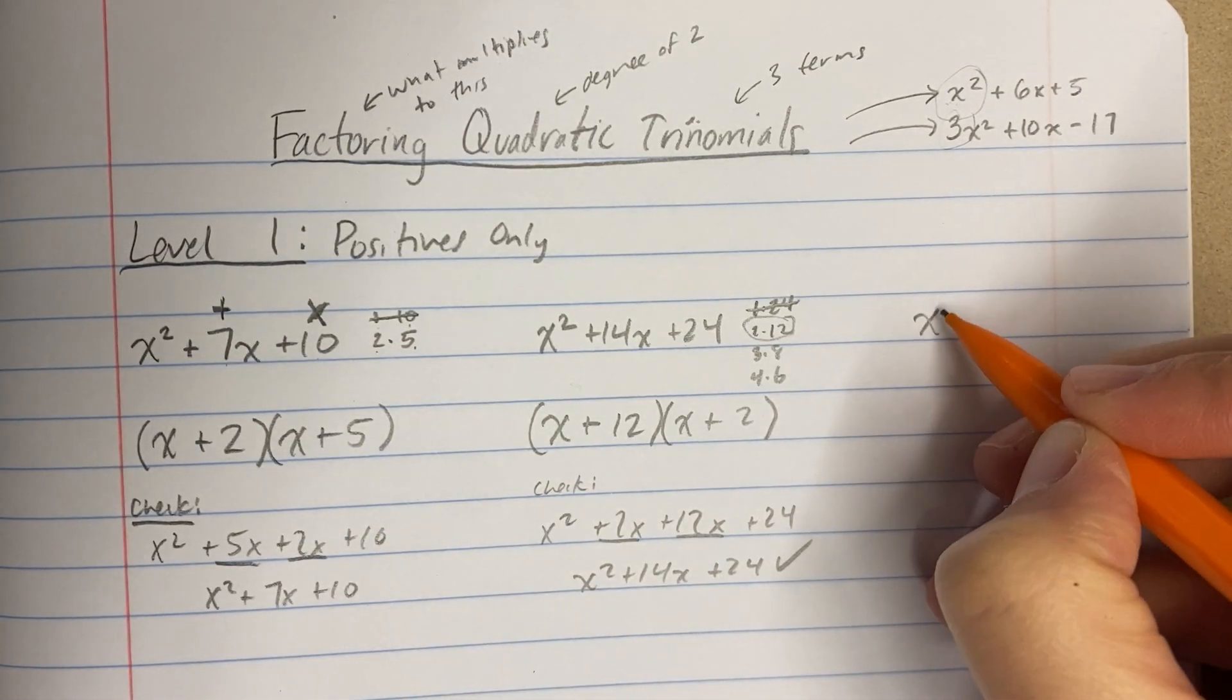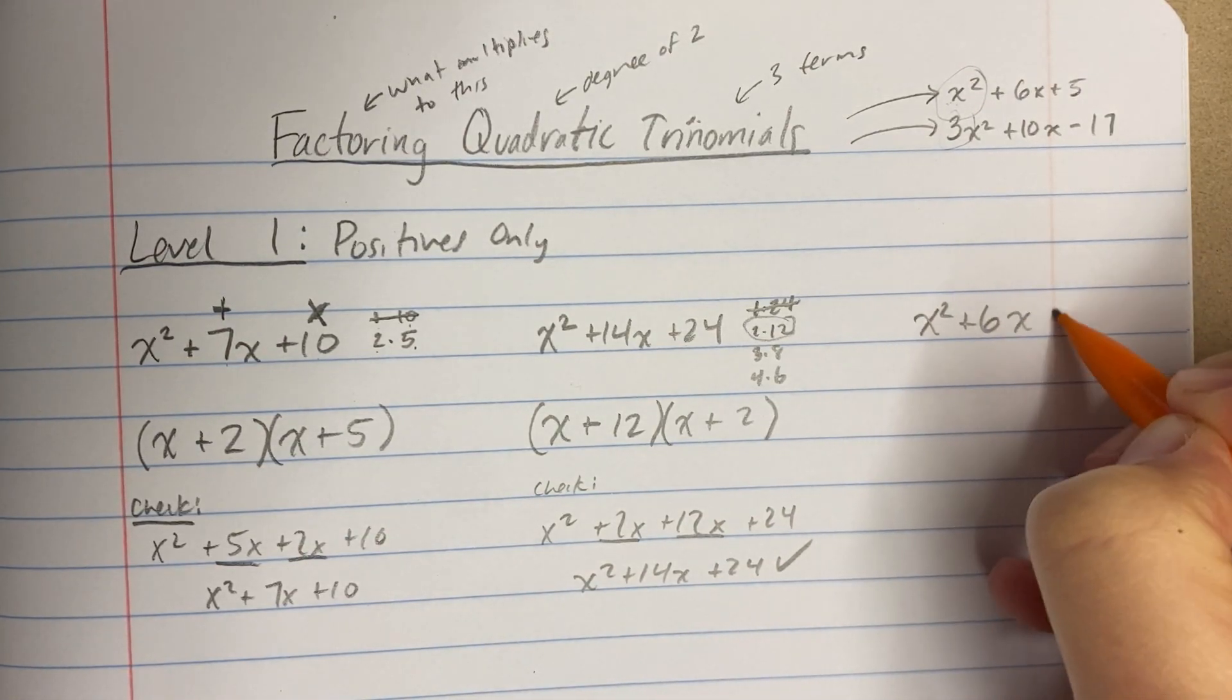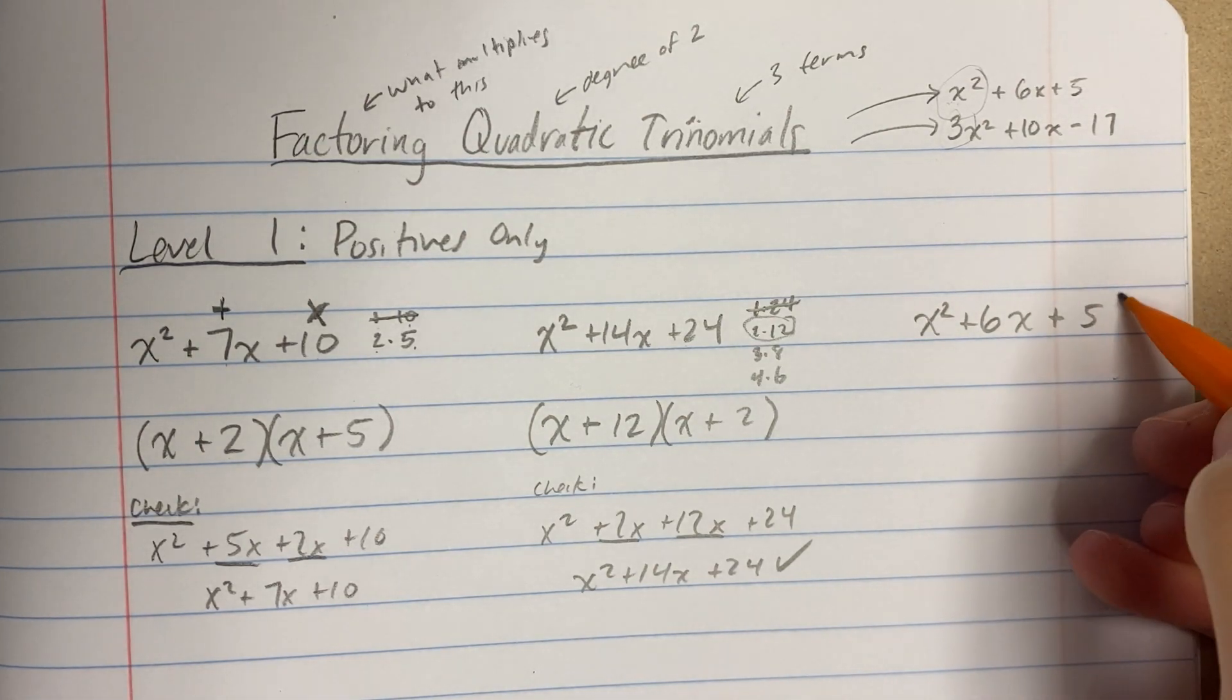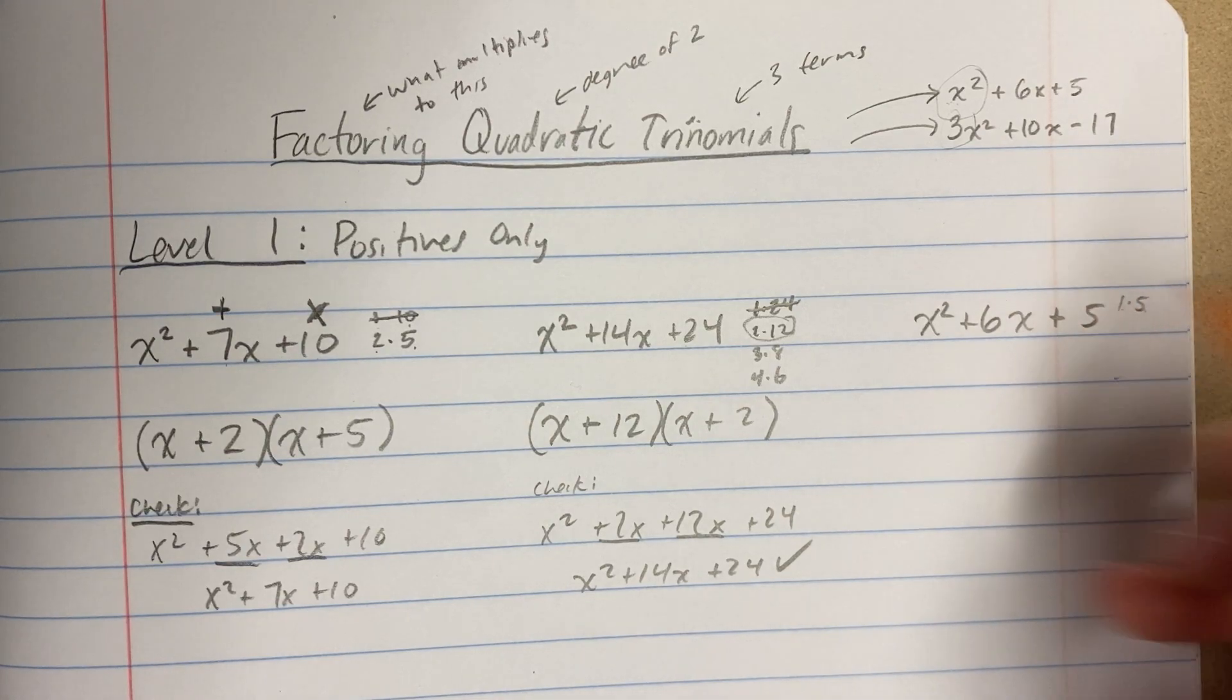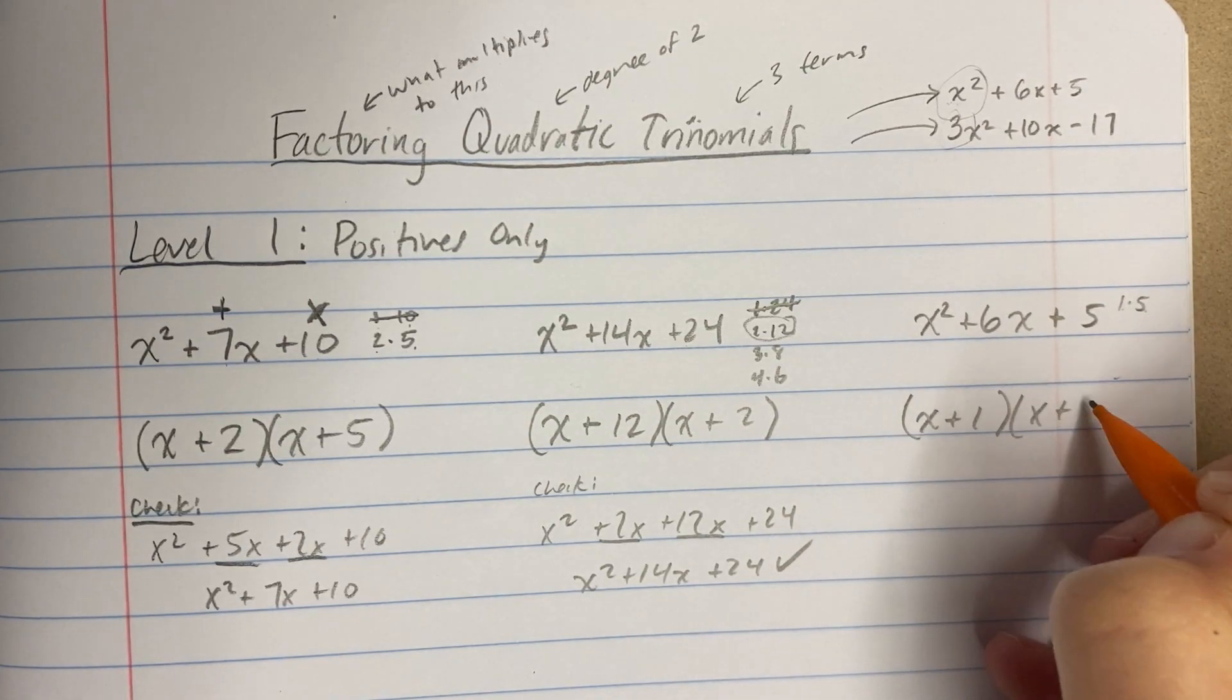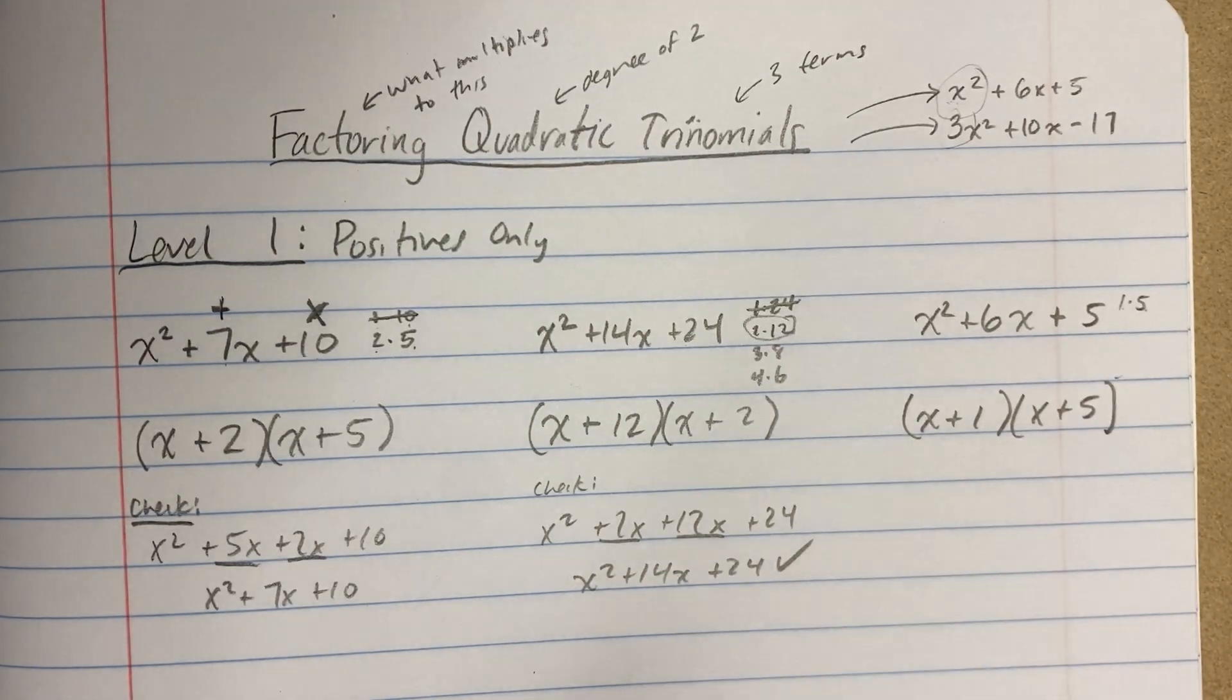I'm not even going to check this one. Look, x squared plus 6x plus 5. Two numbers that multiply to 5, there's only one possibility. 1 times 5 is 1 plus 5, 6. Yep. All set. That's what it looks like. It's your turn to try.